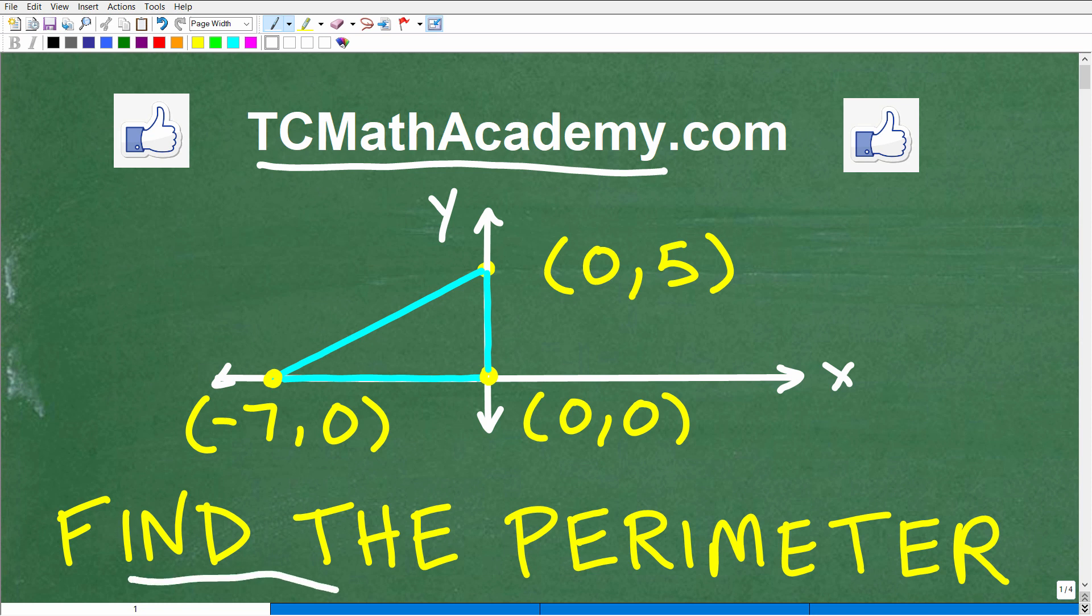So we want to find the perimeter of this triangle, and we're going to define it by its vertices, which are the endpoints of the triangle. One vertex is located at (0,5), this vertex is at (0,0), and this vertex is at (-7,0).